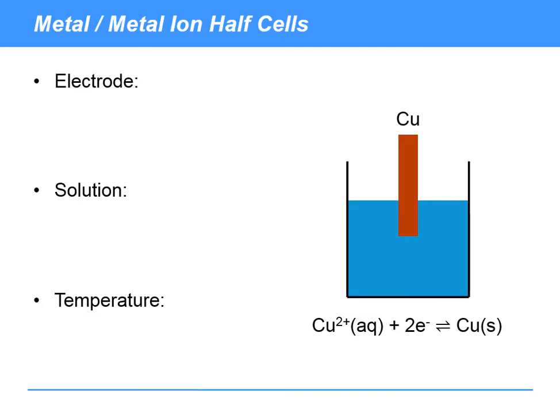Let's start with the simplest type of half cell, which is the metal/metal ion half cell. In these half cells we've got an electrode made out of a particular metal. In this case it's copper, a piece of copper that's acting as the electrode. Remember what the electrode is doing - it is acting as a conductor of electrons to connect with an external circuit.